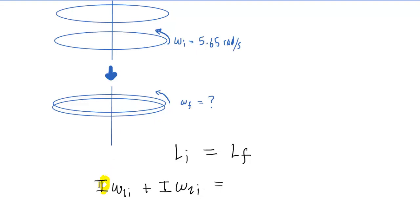Notice that we have used the letter I to represent both moments of inertia because the disks are identical. We don't need to say I₁ and I₂, because that would indicate they have different values. The disks are identical, so their moments of inertia are also identical.